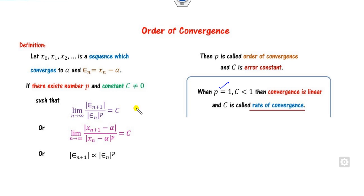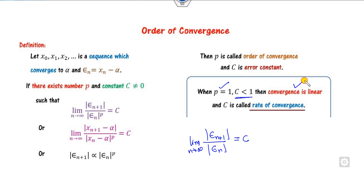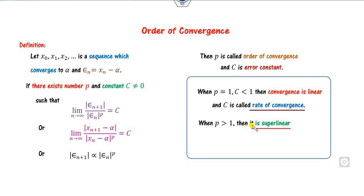If p is equal to 1, it means the error ratio comes to a constant as the limit n approaches infinity, and if that constant c is less than 1, then we say the convergence is linear, and c is called the rate of convergence. On the other hand, if p is greater than 1, we call it super-linear. And if p is equal to 2, then the convergence is called quadratic.